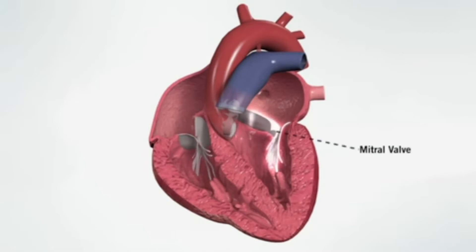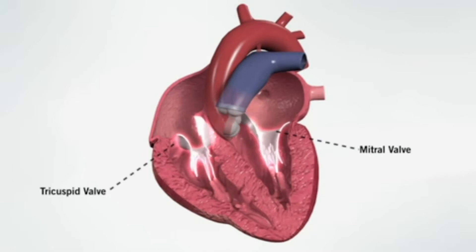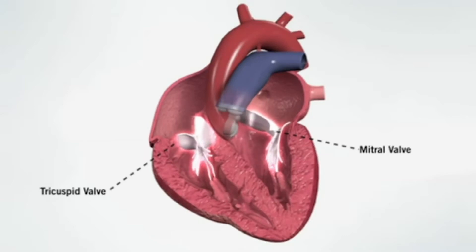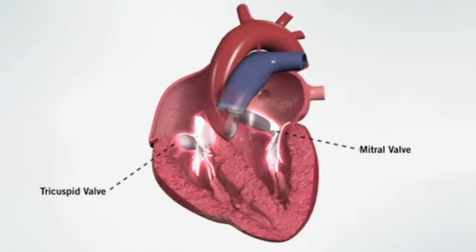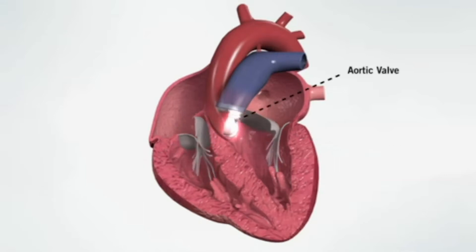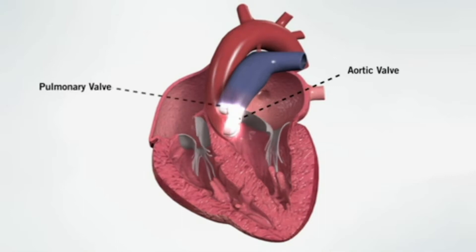The mitral and tricuspid valves allow blood to flow into the heart. These valves lie between the upper heart chambers and the lower heart chambers. The aortic valve and pulmonic or pulmonary valve allow for blood to flow out of the heart.